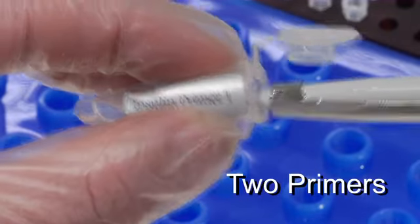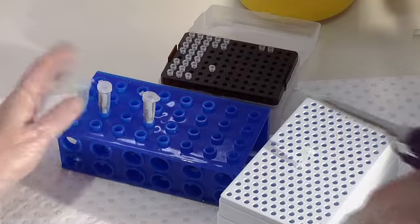We then take a sample of each of the two primers that are designed to only anneal to either side of our insulin gene.